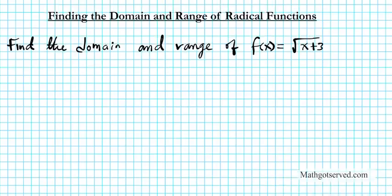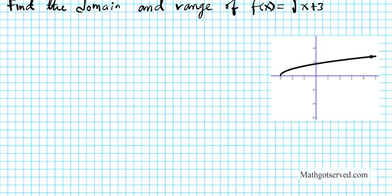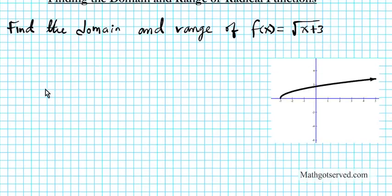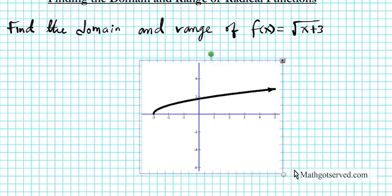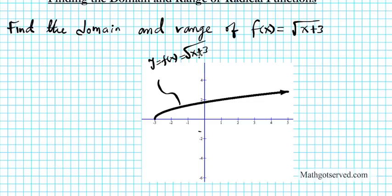I'm going to show you the results graphically and then show you how to find them algebraically. This function f of x equals the square root of x plus 3 — you can see the three units shift to the left because of the plus 3 next to the x.